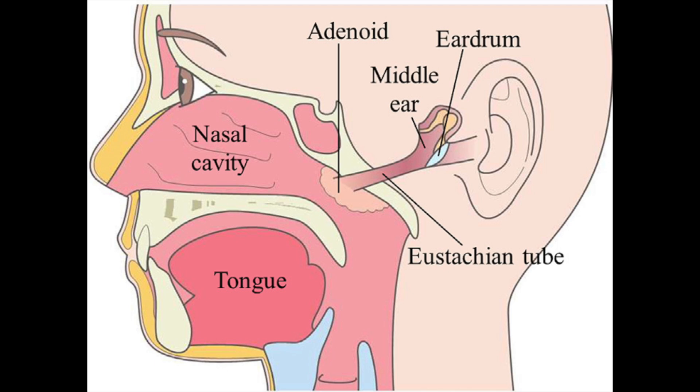Middle ear infections almost always start with a viral nose or throat cold. What happens is swelling and inflammation builds up, usually over a few days, and it irritates the eustachian tube that leads from the back of the nose to the ear. That allows the viral cold to spread to the ears. Once that viral infection gets to the ears, some fluid starts building up in the middle ear, and that gets trapped there because of the swelling, causing the eardrum to bulge out.